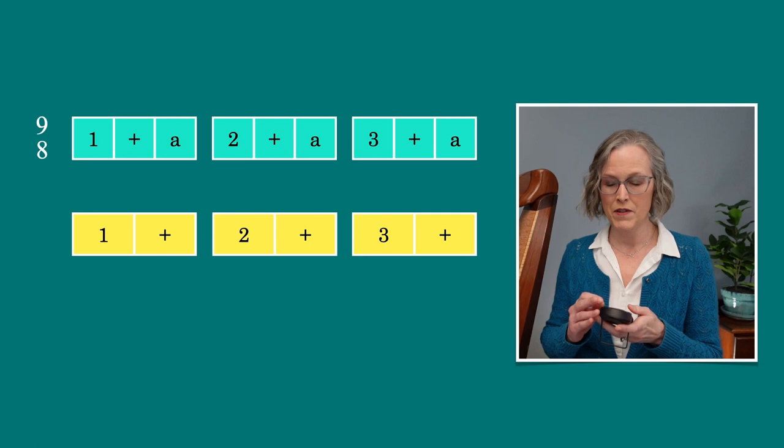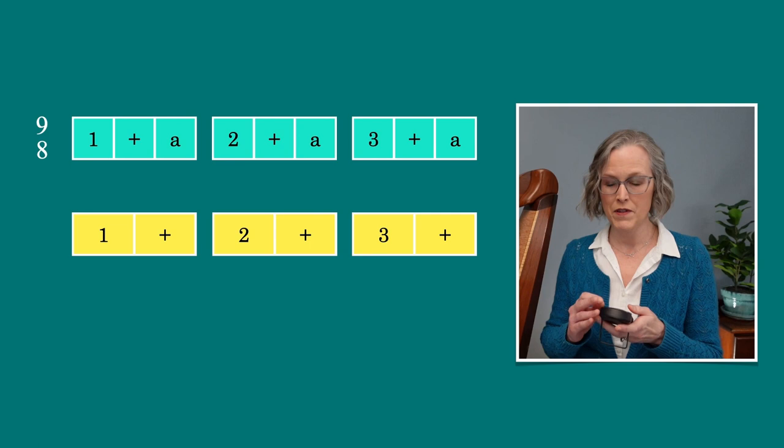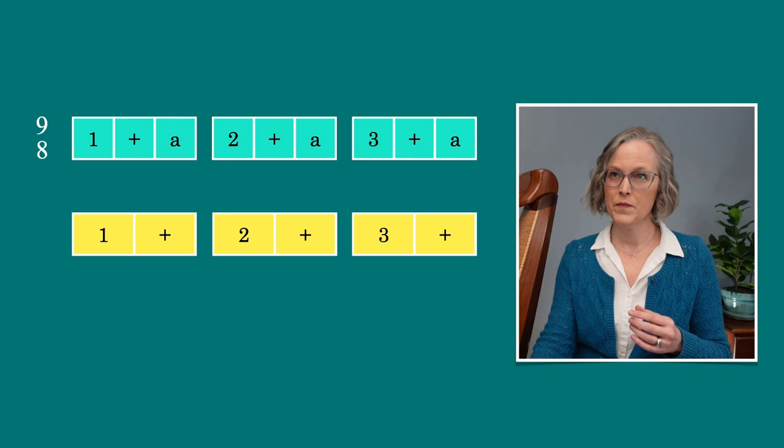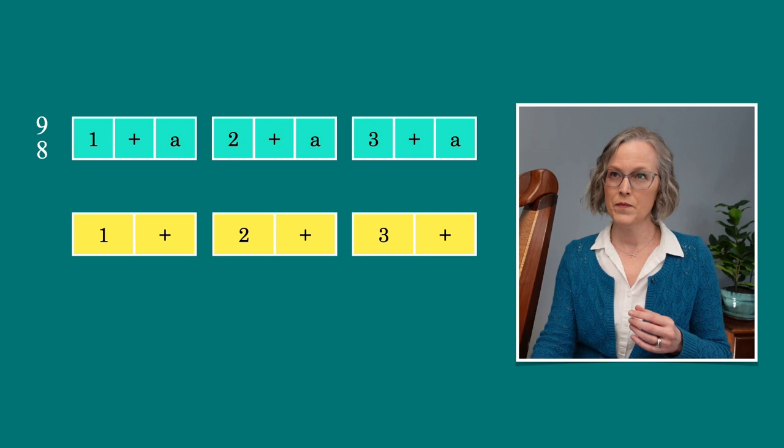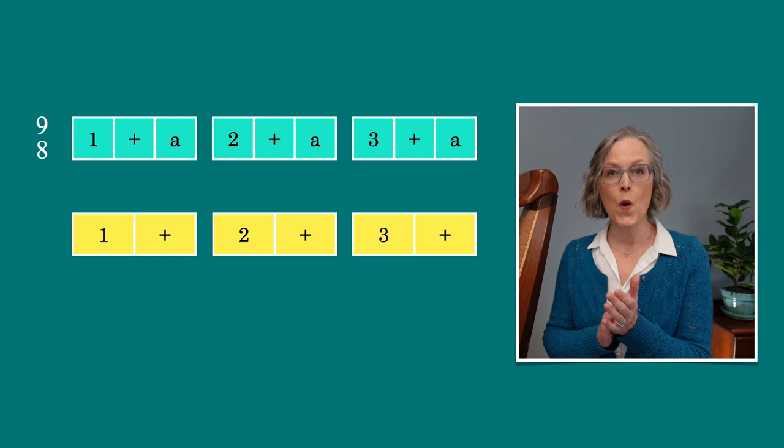I'll set my metronome to 44, so just a very slow basic pulse. And we'll start by subdividing those pulses into groups of threes. Okay, you ready? Feel the pulse. One, two, three, count. One and a, two and a, three and a. Good.